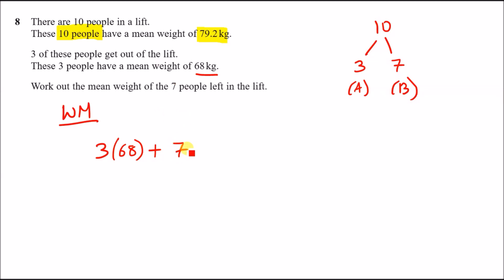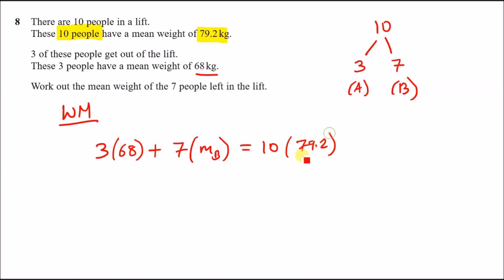Group B has 7 people with an unknown mean weight — let's call it m_B. This must equal the total number of people (10) times the total mean weight (79.2). So: group A times its mean plus group B times its mean equals the total group times its total mean.